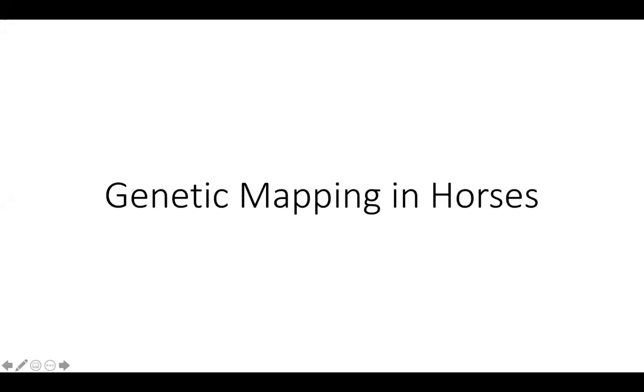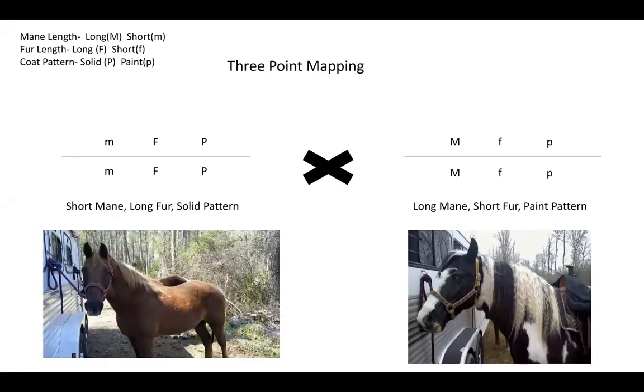Genetic mapping in horses. Let's look at what all these letters mean. First, let's look at mane length. Our mane length will be represented by long and short. A capital M is long and a lowercase is short.